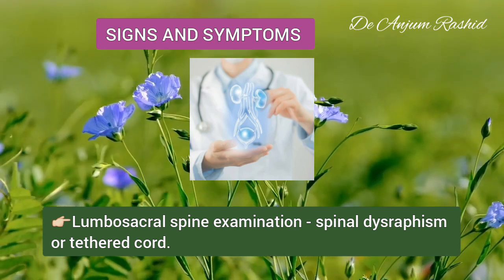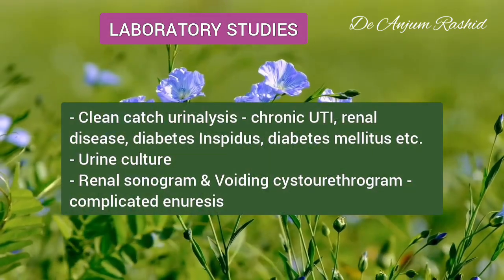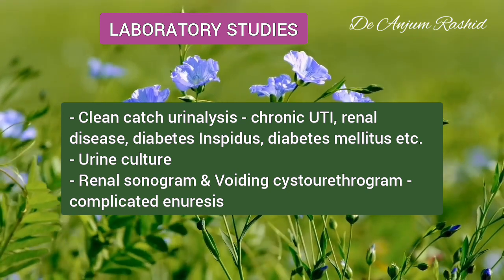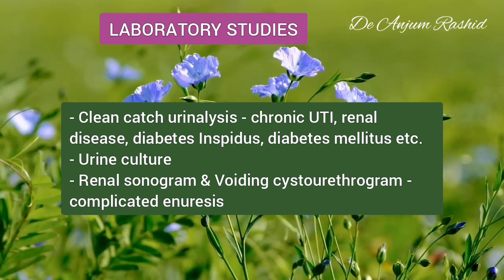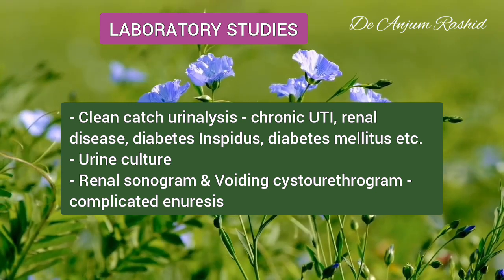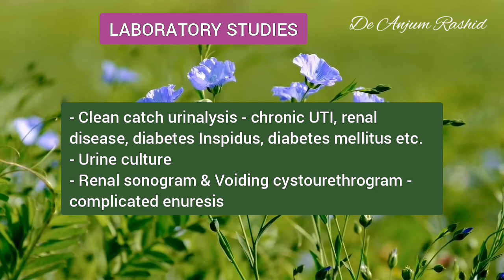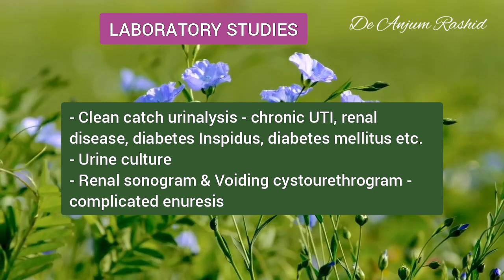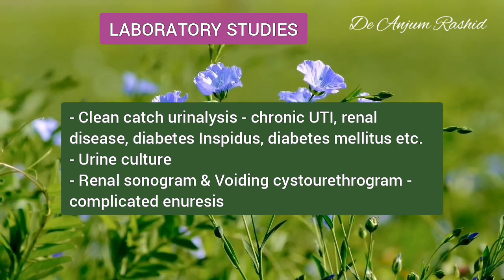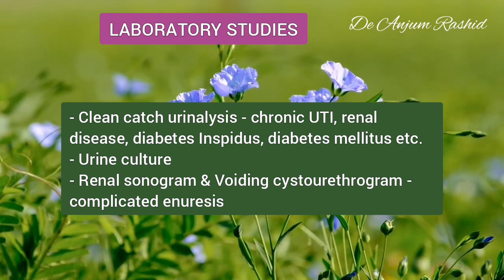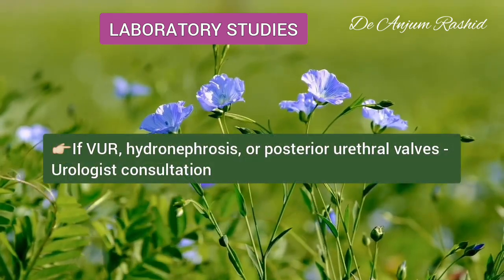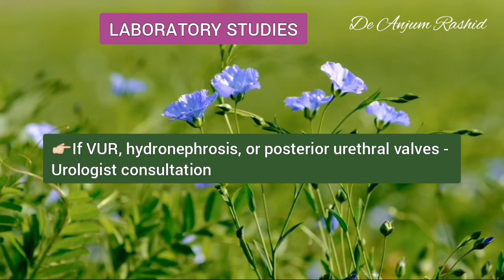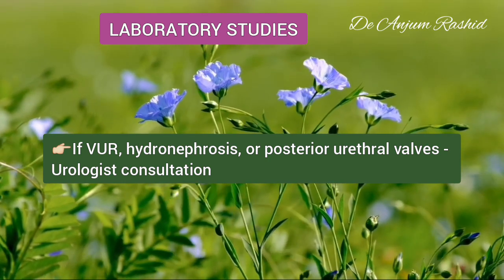The lumbosacral spine should be examined for signs of spinal dysraphism or a tethered cord. For most children with enuresis, the only laboratory test recommended is a clean-catch urinalysis to look for chronic urinary tract infection, renal disease, and diabetes mellitus. Further testing such as urine culture is based on this urinalysis. Children with complicated enuresis — including those with previous or current UTI, severe voiding dysfunction, or a neurological finding — are evaluated with a renal sonogram and voiding cystourethrogram. If vesicoureteral reflux, hydronephrosis, or posterior urethral valves are found, the child is referred to a urologist for further evaluation and treatment.